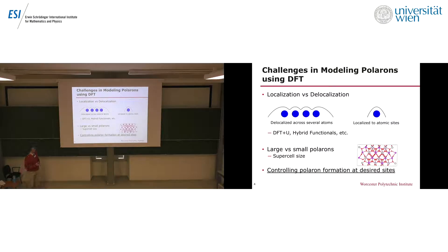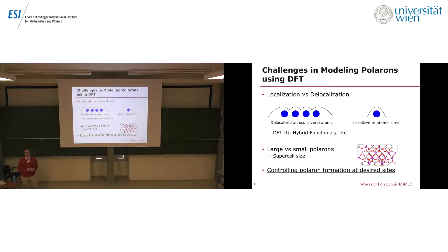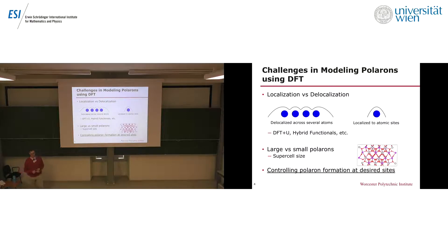Another challenge, and this is really what I'm going to be focusing on today, is how do you control the formation of polarons in your simulation at specific sites? We might have a material with all these different atoms, and polarons can form at different locations. As a modeler, I may be interested in controlling where the polaron forms because I want to identify the stability of a polaron at one site versus another.